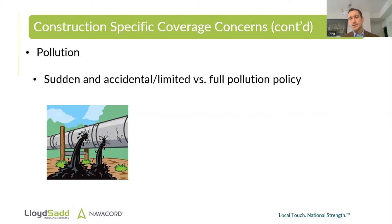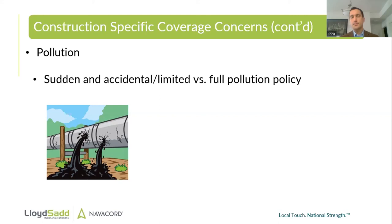Something important to think about with pollution is the definition of a pollutant or contaminant — it is basically anything that is in an area where it's not supposed to be. For example, a release of drinking water into a natural body of water that isn't treated can be considered pollution and there could be a claim. A lot of contractors think, maybe I don't have any heavy equipment so there's no chance of a hydraulic fluid leak or oil spill. But I would urge you to at least have some coverage under sudden and accidental, and in best case scenario, look at getting a full pollution policy if you're doing any kind of contracting work.